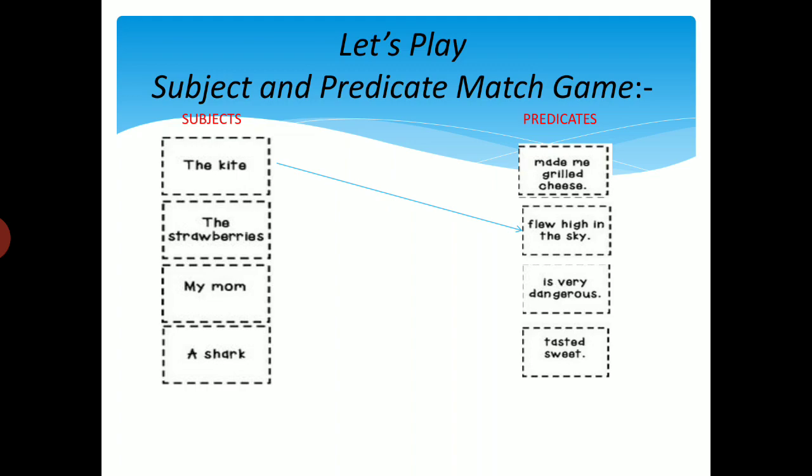And as we know, that predicate has verb in it. What is a verb in this part? Flew. Flew is a verb. Now next, the strawberries and it goes with tasted sweet.